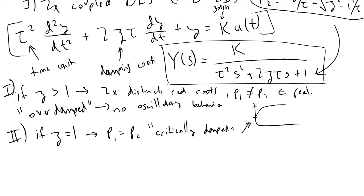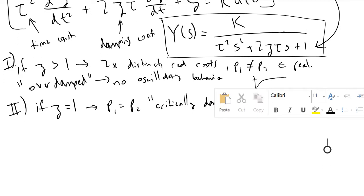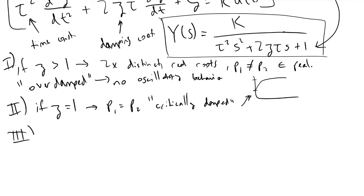The interesting stuff happens when zeta is between zero and one. For these values it is referred to as underdamped, and in that case p1 and p2 are both complex numbers, and this causes oscillations.